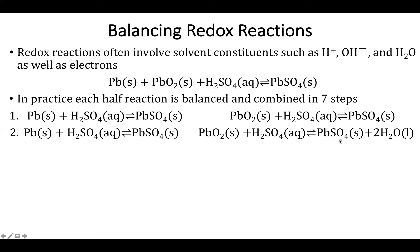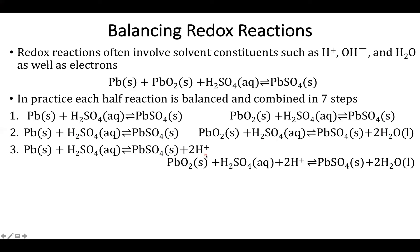So then I need to go ahead and balance my hydrogen atoms. So for the lead reaction or so for my oxidation reaction I have two hydrogen atoms on the left and not on the right. So I'm going to add two hydrogen atoms. And then for my reduction reaction I have two hydrogen atoms on the left and four on the right. So I need to add two protons on the left side. And you'll notice that at this point we're starting to get a little bit messy.